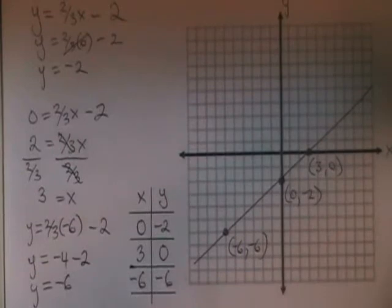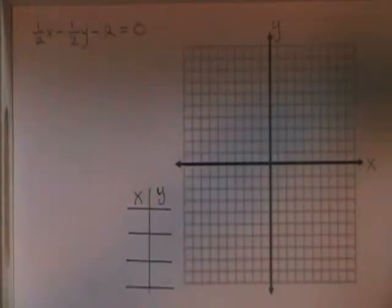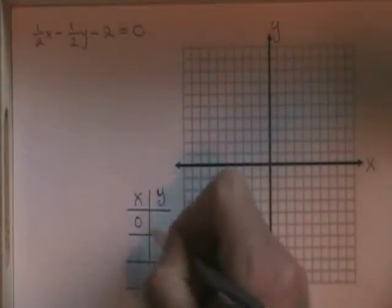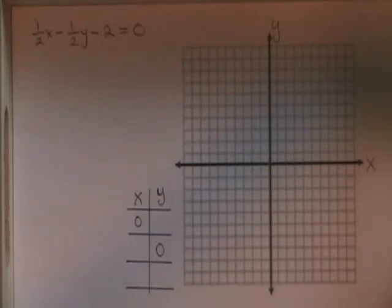The zero-zero trick is what we use whenever we are graphing a straight line that has both y and x in the equation. Let's do the zero-zero trick again. Here we have another equation with both x and y: one-half x minus one-half y minus two equals zero.